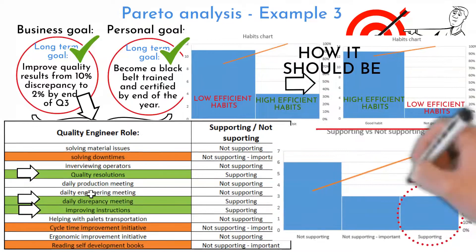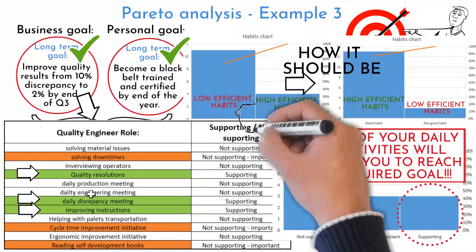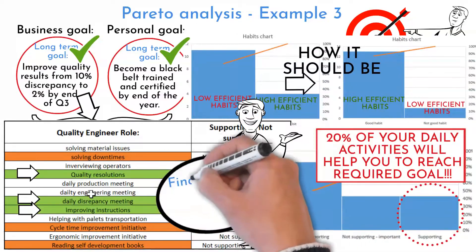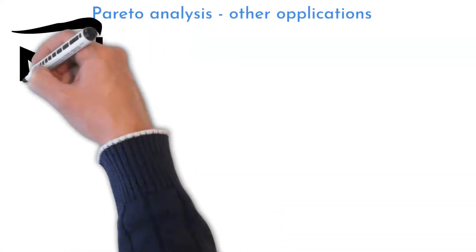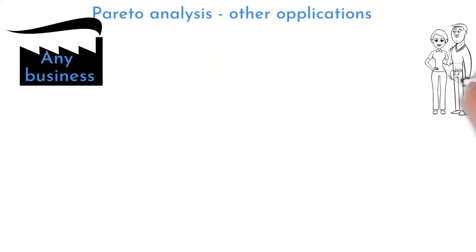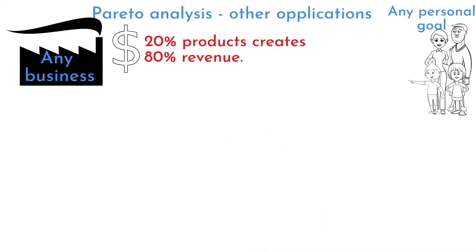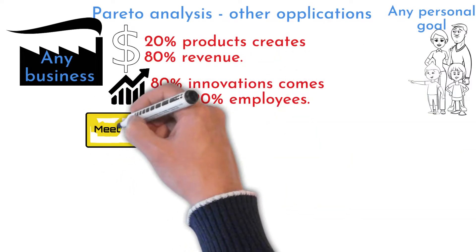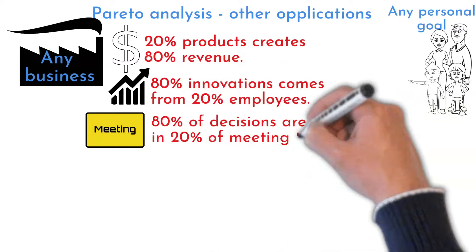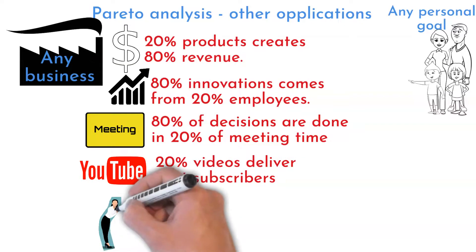That does not mean you will not do less important activities — you will work on them once the main daily topics are finished. It will be much easier and less stressful to postpone less important topics. These approaches are applicable in all businesses and personal life. In finances, 20% of products deliver 80% of revenue. In improvements, 80% of innovations come from 20% of employees. 80% of decisions are made in 20% of meeting time. On a YouTube channel, 20% of videos deliver 80% of subscribers.